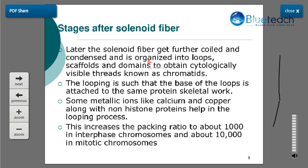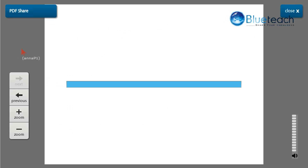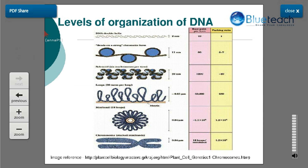When the cell enters mitosis, the chromosomes get very intensely and compactly packaged, attaining a packing ratio of about 10,000. During interphase — the preparatory stage for cell division — the DNA is loosely coiled. So from a packing ratio of 6 at the beads-on-a-string stage, it reaches a packing ratio of 10,000 during mitosis, illustrating the high level of condensation in eukaryotic DNA.